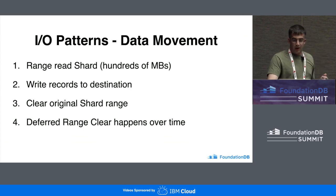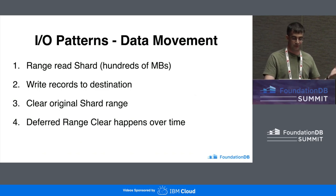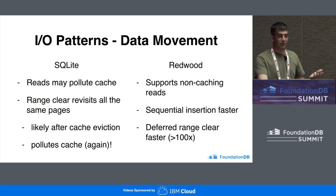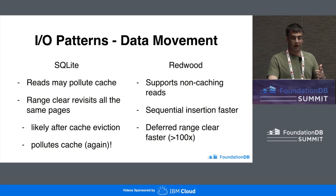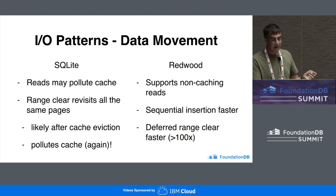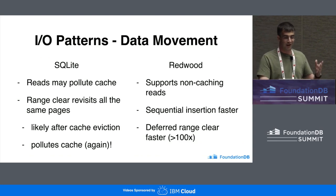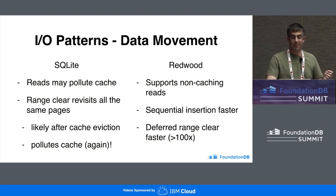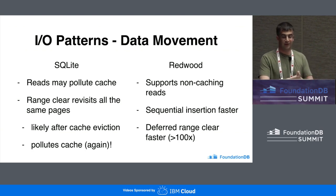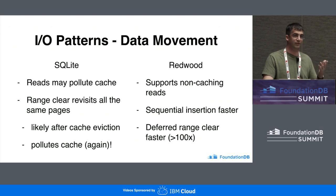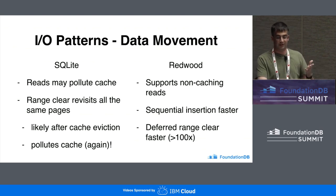Next I want to talk about data movement. Data movement in FDB is basically when you read a shard from one storage server and write it to another storage server, then clear the data on the original. This is not a great pattern for SQLite, because reads of a couple-hundred-megabyte shard push data out of cache for a one-time read that likely won't be repeated. Then the write happens over time, and we come back after those pages have been evicted and do the same reads again, polluting the cache again just to clear that data. Redwood supports non-caching reads used in this case, and as discussed, sequential insertion is faster and deferred range clears are much faster. Data movement on a Redwood-backed FDB cluster will have a lot less impact on the cluster's performance.